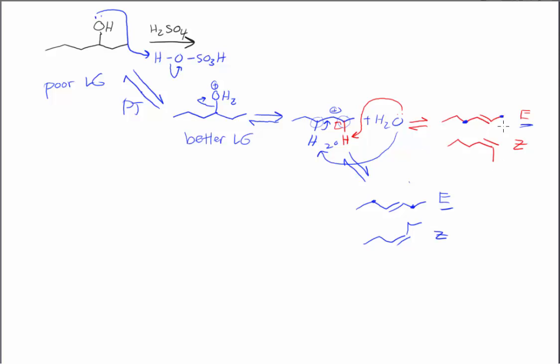So we'd get a mixture of products. In this case, the two E products should be our major products, and the two Z isomers should be our minor products. And in this case, you saw that we used the optional proton transfer step at the beginning of the reaction because we had the poor leaving group.